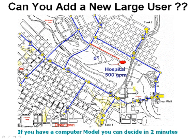For example, you may have this question come up: can you add a new user to provide 500 gallons per minute to a hospital or a mall? These questions come up on a weekly basis for water utilities. And if you had a model, you could, in just a minute or two,